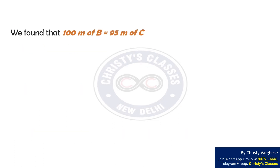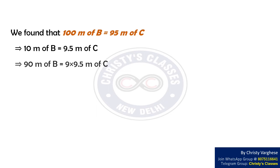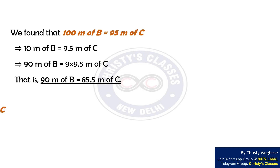We found that 100 meters of B equals 95 meters of C. This implies that 10 meters of B equals 9.5 meters of C. Multiplying by 9, we get 90 meters of B equals 9 into 9.5 meters of C.